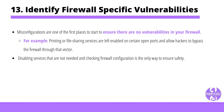Step thirteen: identify firewall-specific vulnerabilities. To ensure there are no vulnerabilities on your firewall, making sure no misconfigurations are present is key, as this is the main reason hackers manage to penetrate the network. Configuring your firewall properly is the most important step you can take. In some cases, printing or file sharing services are left enabled on certain open ports, allowing the pen tester to bypass the firewall through that vector. Disabling unneeded services and checking firewall configurations is the only way to ensure safety.